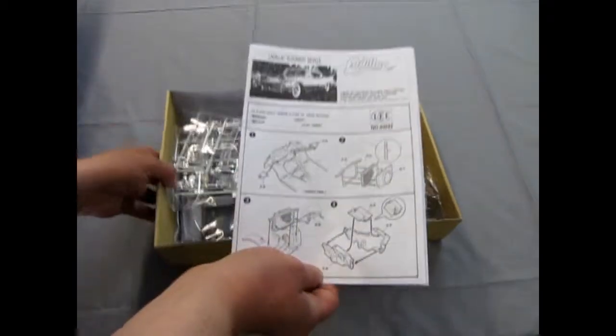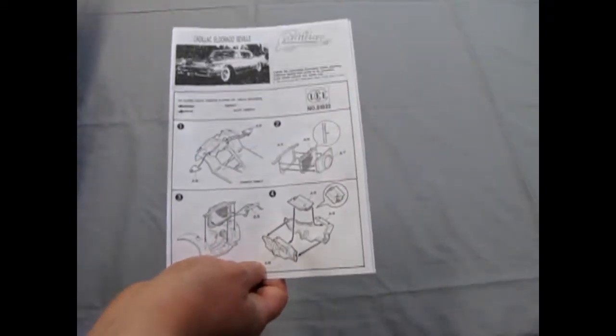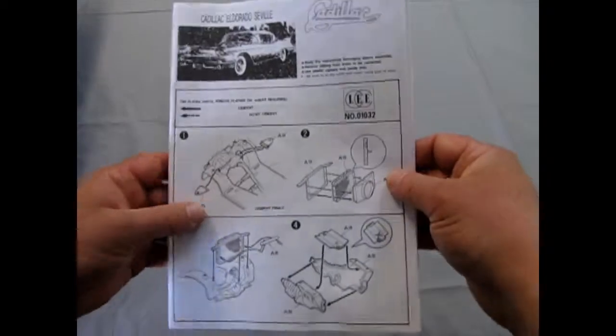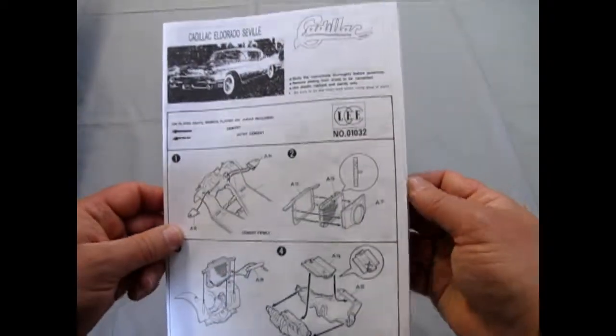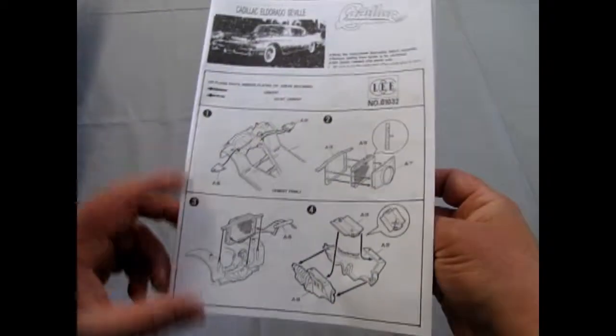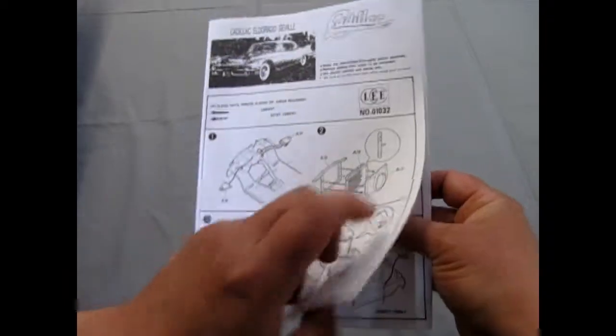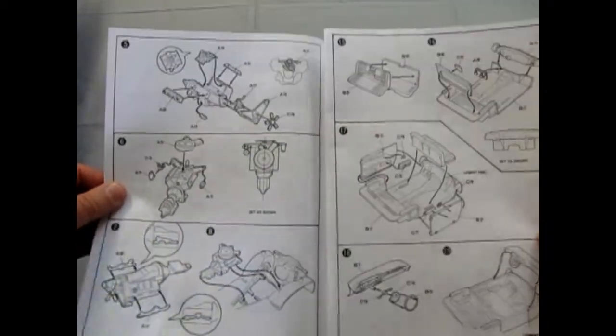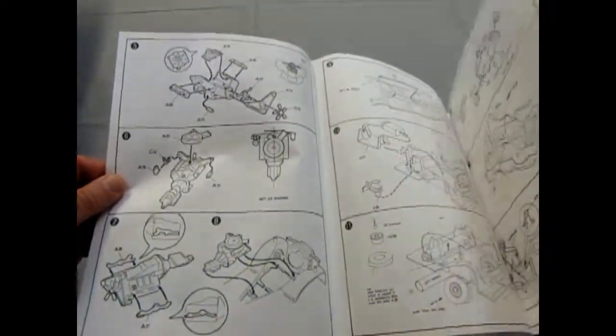And we start off with this very interesting instruction sheet here. A little bit of a bad photocopy of the front of the box, but it shows all the bits and components going in. You get that nice Cadillac V8 engine there.